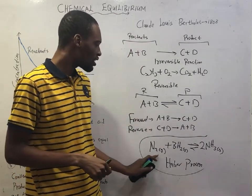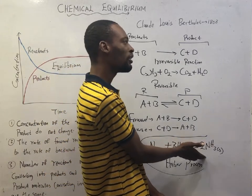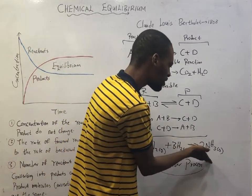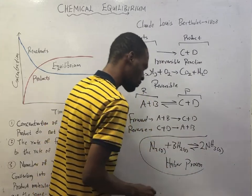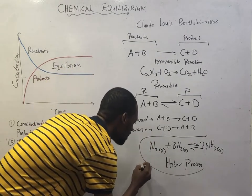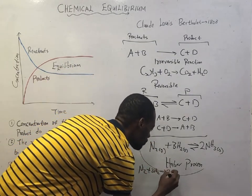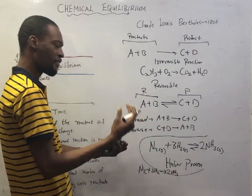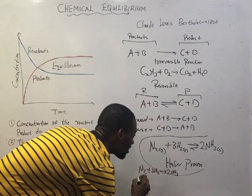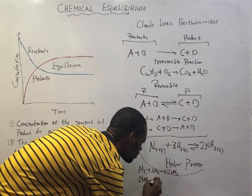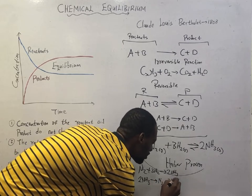This means that if nitrogen reacts with hydrogen to form ammonia, the ammonia formed can also break down to give back nitrogen and hydrogen. The forward reaction is N₂ + 3H₂ → 2NH₃, and there is also a backward reaction where 2NH₃ → N₂ + 3H₂.